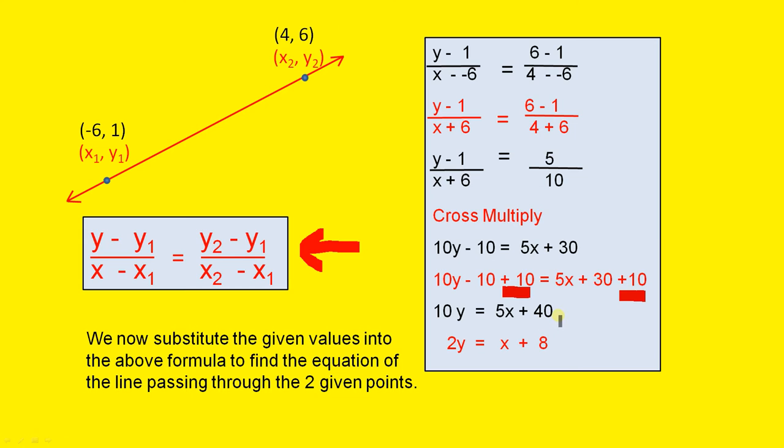Now, further simplifying from there to there, we can see, as we look across here, that 5 will divide into each of these terms. So we divide both sides of the equation by 5. 10y divided by 5 gives us 2y. 5x divided by 5 gives us x. 40 divided by 5 gives us 8. So 2y equals x plus 8. So 2y equals x plus 8 is the equation of the red line.